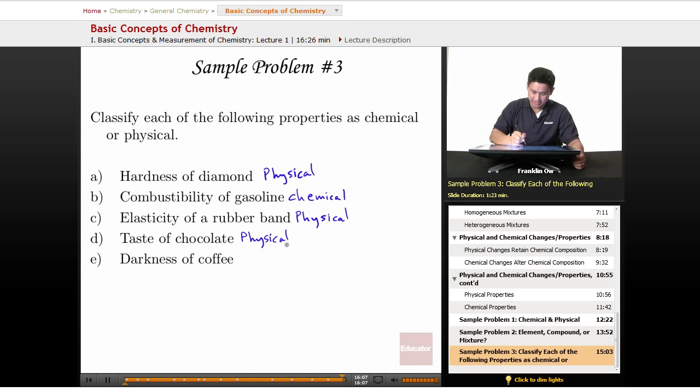And finally, the darkness of coffee. This describes color, which we use our senses to detect. And so darkness of coffee is going to be an example also of a physical change.